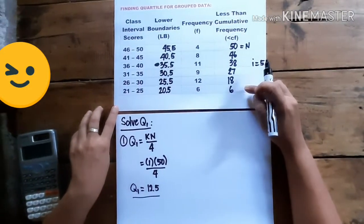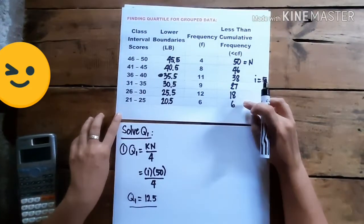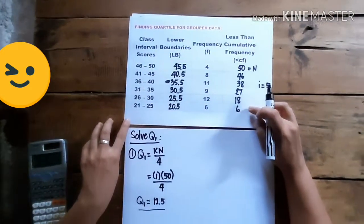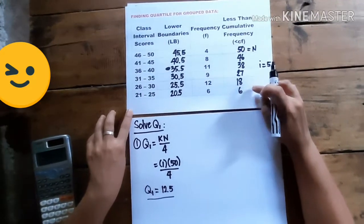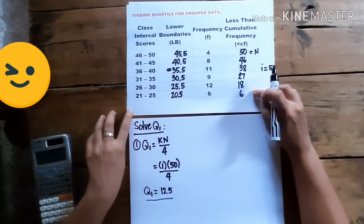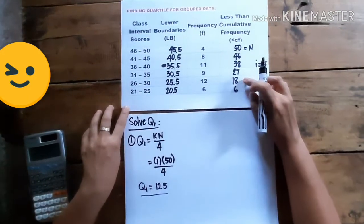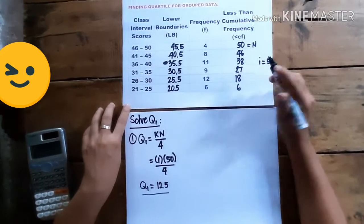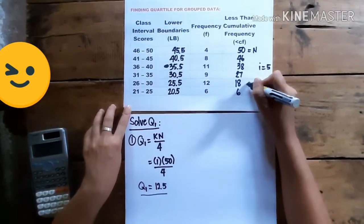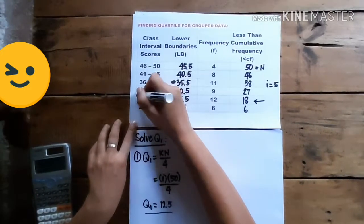Now, 12.5 obviously is not here at 6, because that's smaller than 12.5. That means there's no exact 12.5, but the closest value that contains it is here in the cumulative frequency of 18. That means our 12.5 score belongs to this class interval.